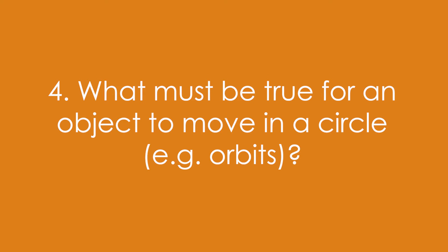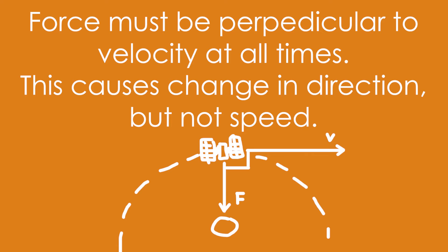Question 4: What must be true for an object to move in a circle, e.g. orbits? Force must be perpendicular to velocity at all times, we call that centripetal force. This causes a change in direction but not speed. It's accelerating but not getting faster or slower.